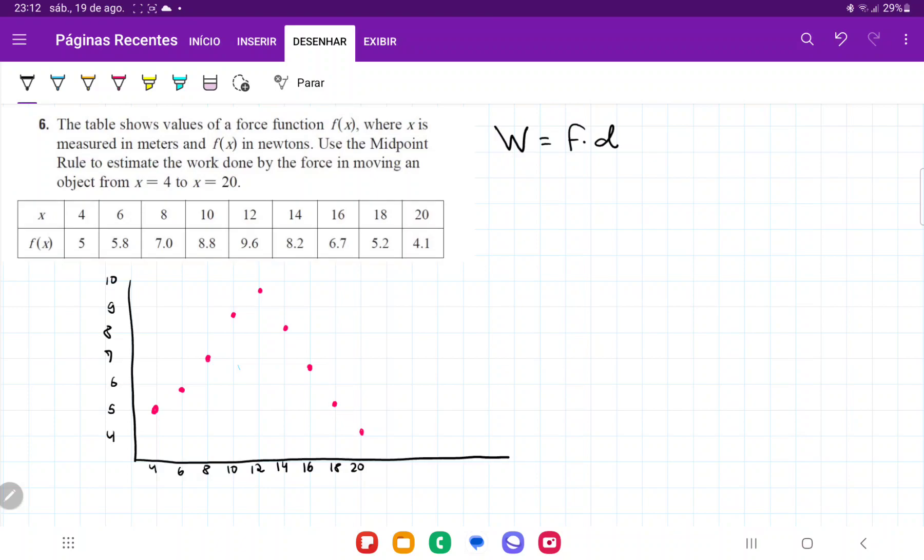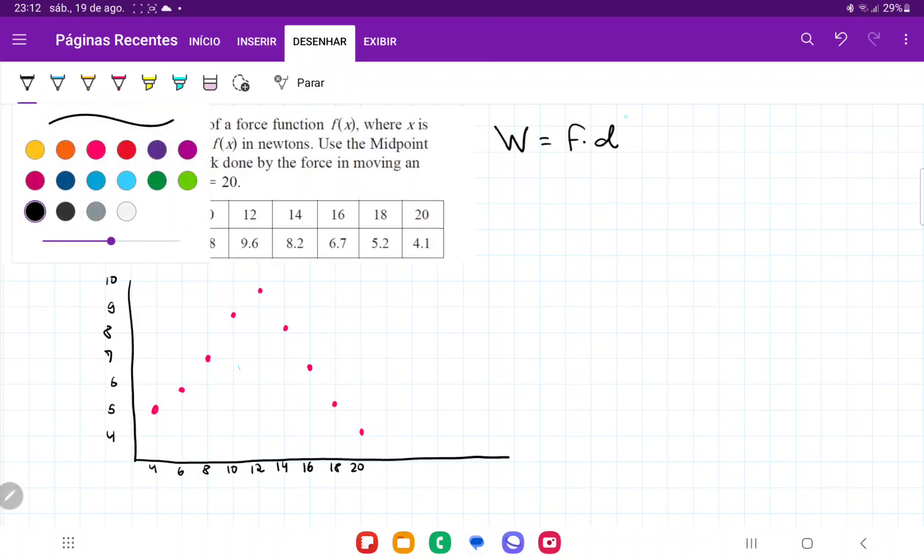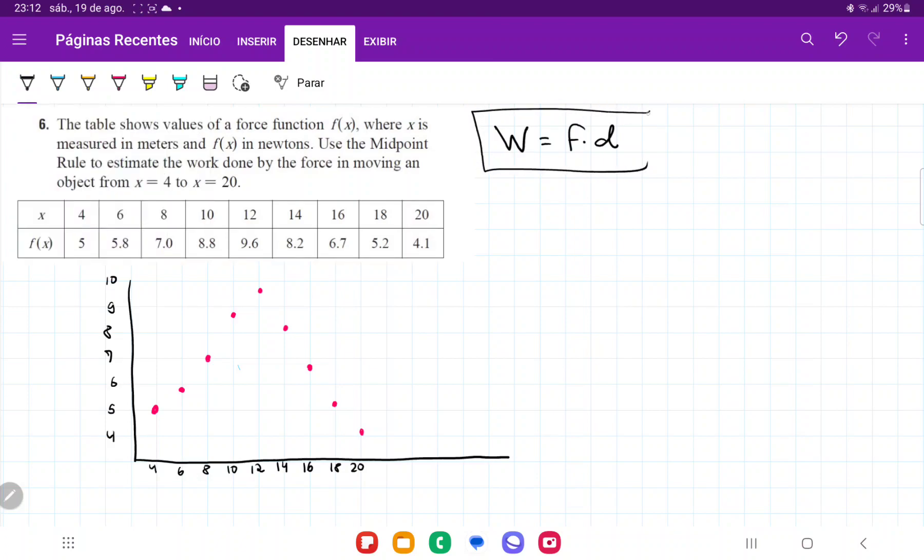It wants us to use the midpoint rule to estimate the work done from moving the object from 4 meters to 20 meters. We have to remember that work is equal to force times distance.